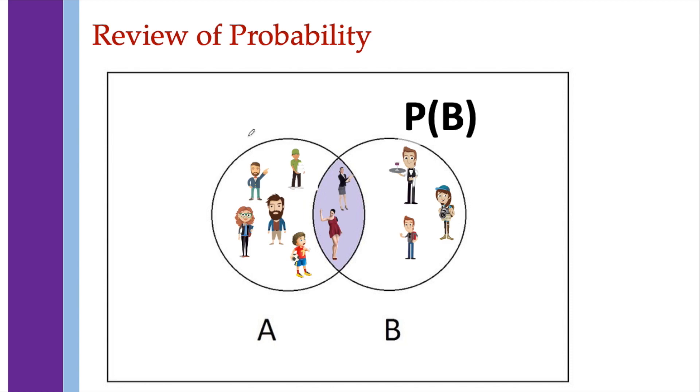How about the probability of getting a person in B? We have 5 out of 10. Since there are 5 people in B out of the 10 total possible people.